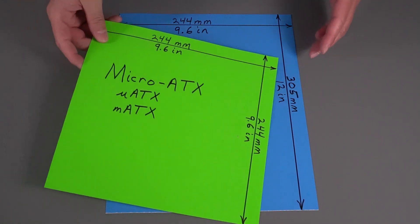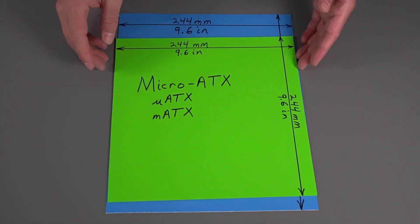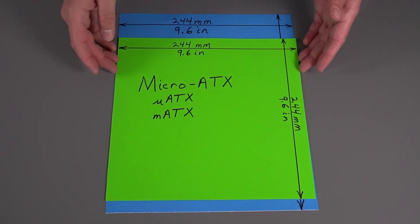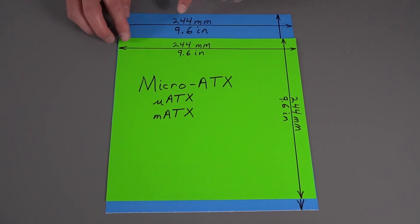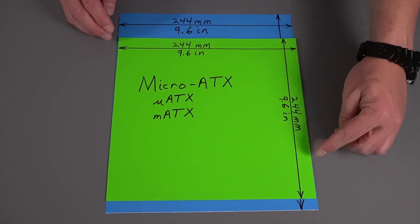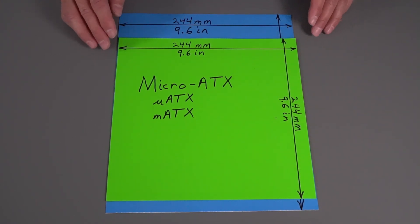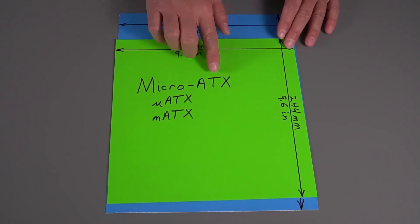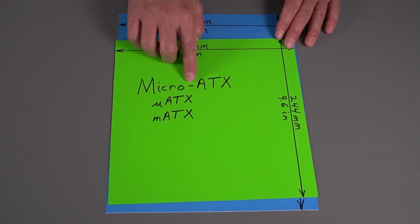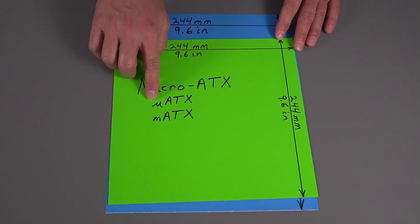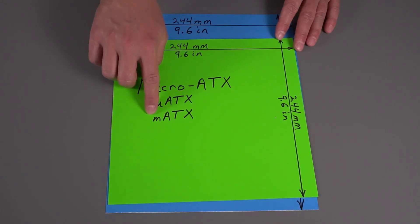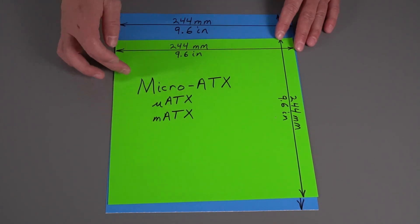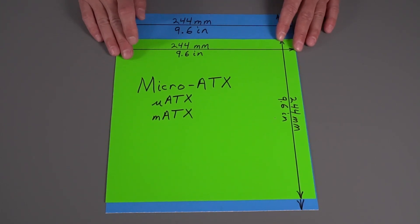There's a smaller variation on this called the Micro ATX motherboard. It is 244 millimeters wide, just like the ATX, but also 244 millimeters long, so it is square. Micro ATX is usually written without the dash, sometimes written with the Greek letter mu, and sometimes written with a small letter M, all meaning Micro ATX.